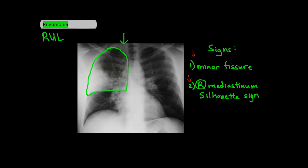Normally it's hard to see the minor fissure on frontal chest x-rays, but if there's a pneumonia in either the right upper lobe or right middle lobe and not in the other lobe, the differences in density between the two lobes really accentuates the minor fissure, which you can clearly see here on this chest x-ray. If there's an opacity above the minor fissure, it's in the right upper lobe, and if the opacity is below the minor fissure, then it's in the right middle lobe.